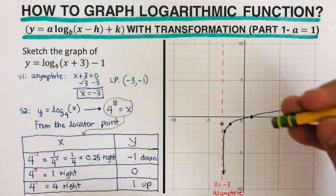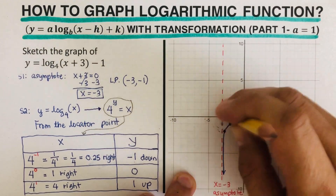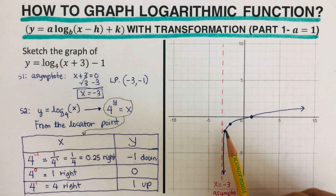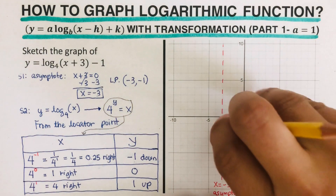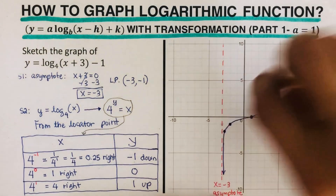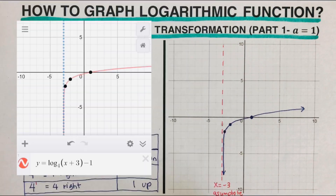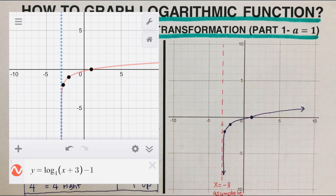Once we've drawn the graph, we erase the locator point since it is not part of the graph. The locator point only helps us determine where to go from it. On the side you'll see the desmos version of this graph, and the paper version and the desmos version are a match — confirming that this equation has this shape of graph.